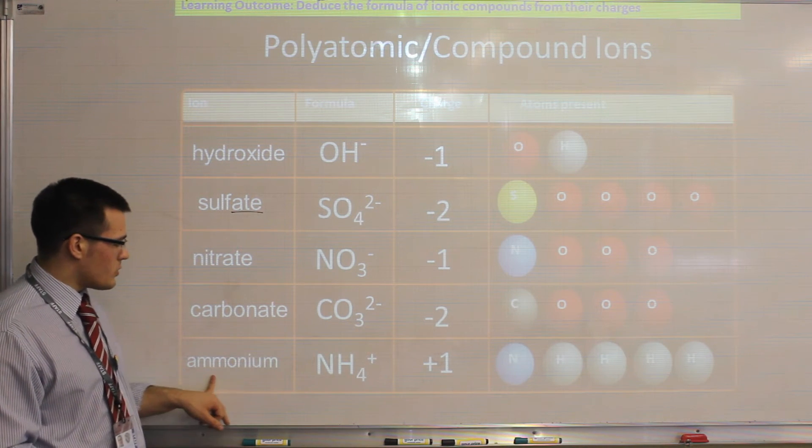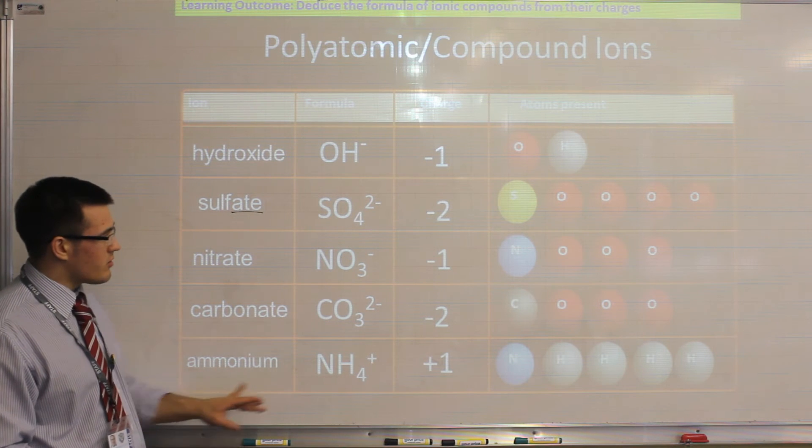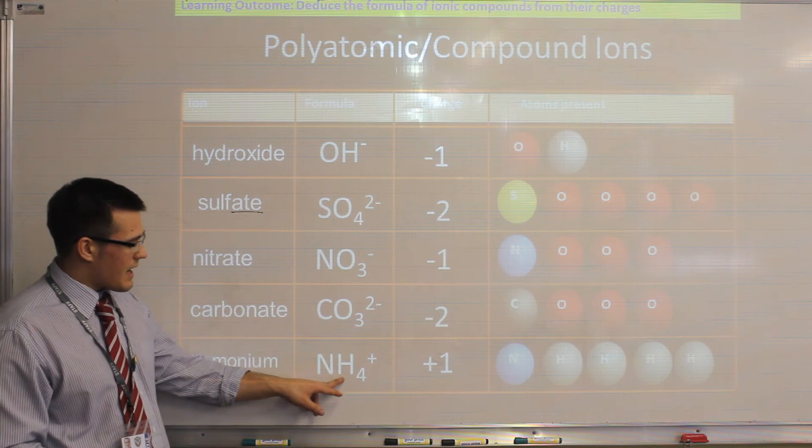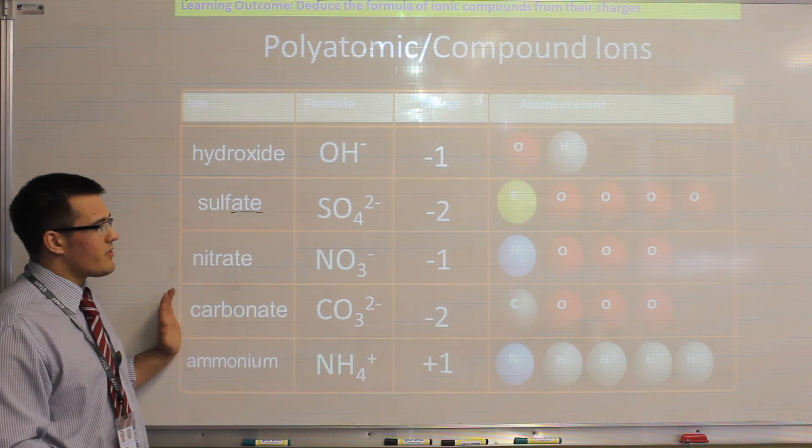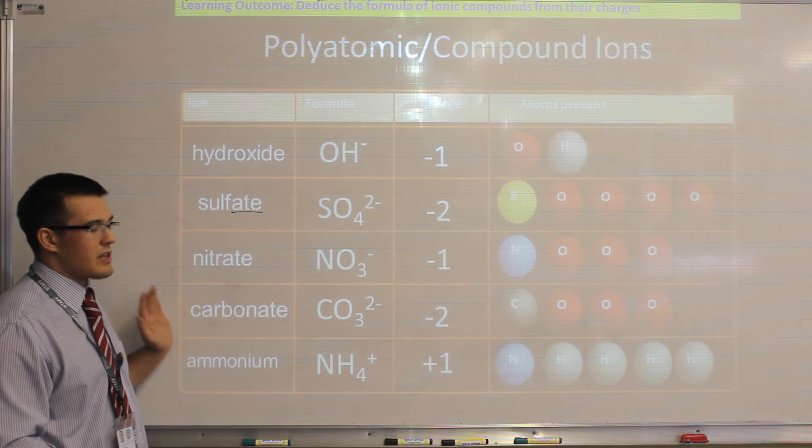And the last one, ammonium. The ammonium ion is the only one of these that is positive, and that's NH4, and that's plus 1 as well. So these are the 5 polyatomic ions that you just have to learn.